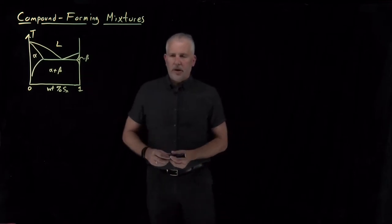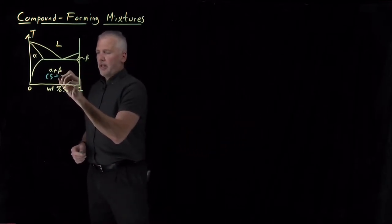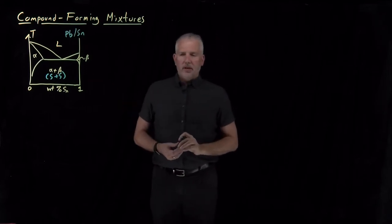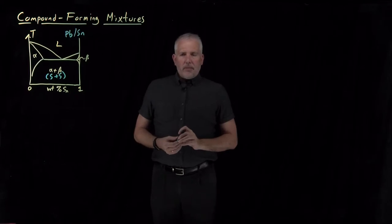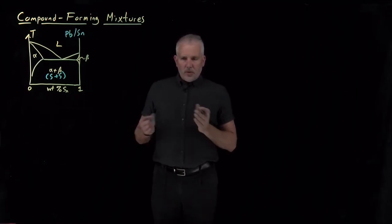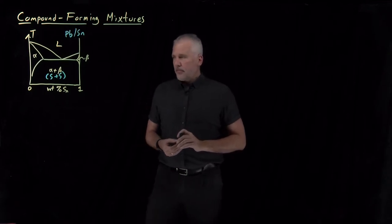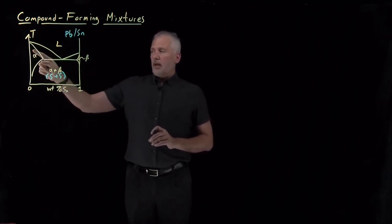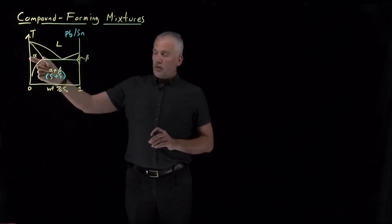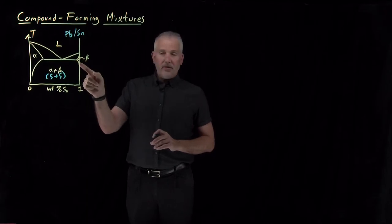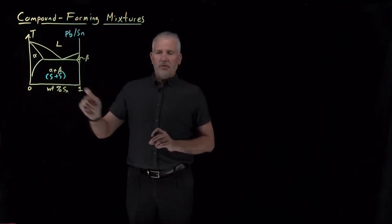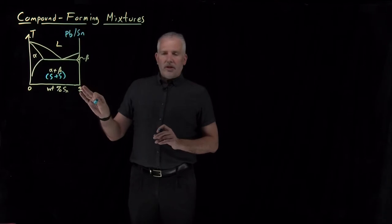Solid-liquid phase diagrams often have the shape we've talked about for the lead and tin phase diagram. That points out a feature we need to discuss about other solid-liquid phase diagrams: the degree to which we can mix the two components. In lead and tin, for example, in the solid phase they're only partially miscible. I can form a lead-rich phase over a range of compositions, but not any composition I want. Likewise, I can form a tin-rich phase under a very narrow range of compositions — it needs to be nearly pure tin. I can't put very much lead into tin and have it remain a single solid phase; otherwise I end up in a mixture of two solid phases.